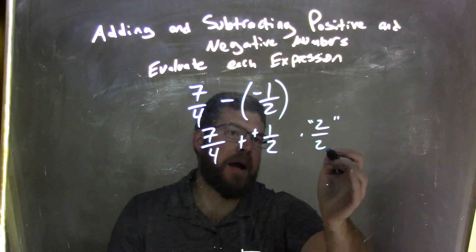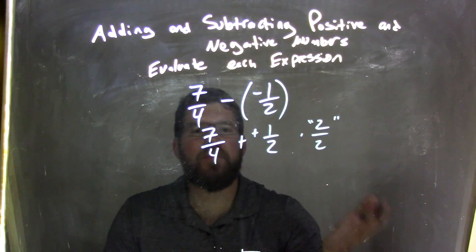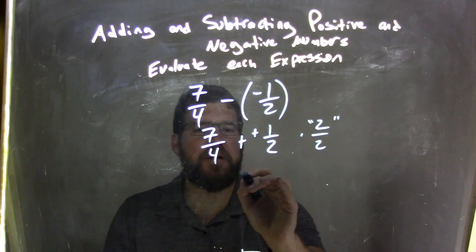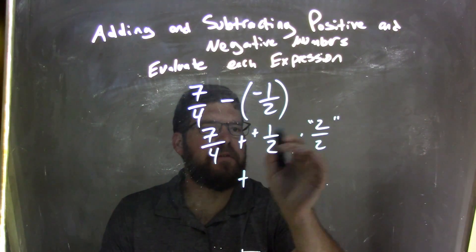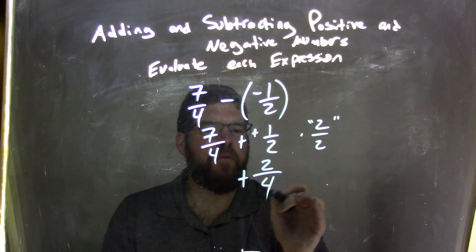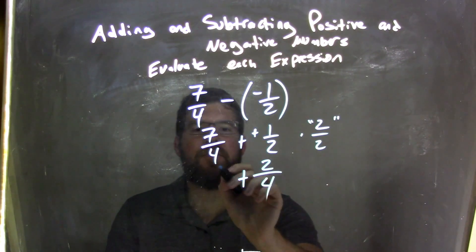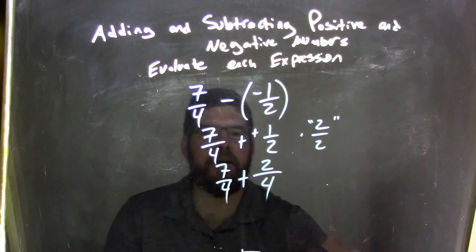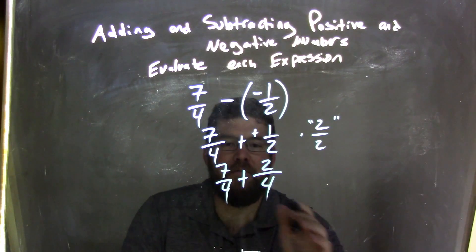So 2 over 2 is really the fraction, or the number 1, and multiplying 1 by 1 half doesn't change it, but it makes it look different. 2 times 1 is 2 over 4. There we go. And we have 7 over 4 coming down here, and now we have the same base.